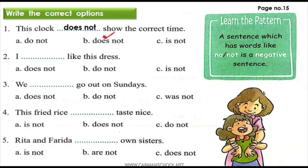Because here we have to make the sentence into a negative sentence, so we have to use no or not. Please start writing in your books as well with neat and clean handwriting. Second: I dash like this dress — what will be the correct answer? Does not, do not, or is not?